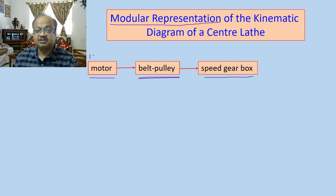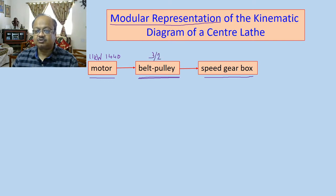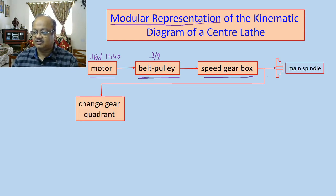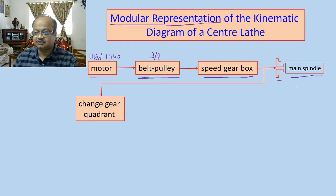For example, you may have an 11 kilowatt motor with 1440 rpm speed and a transmission ratio of 3 by 2, in which case the input speed to the speed gearbox would be 50 percent higher than 1440 rpm. From the speed gearbox, the output is fed to the main spindle, where the workpiece is mounted. If it is a disc type workpiece, tailstock support is not required; if it is a long workpiece, tailstock support is required.